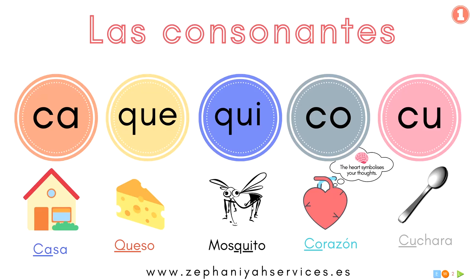Ki — mosquito. Co — corazón, corazón. Now, a side note: the heart symbolizes your thought — your heart is your mind. Cool — China. So let's try: I say the sound and you say the word. Ka — and you say... Muy bien! Que — Ki — muy bien! Co —